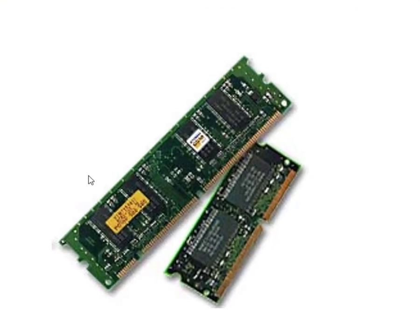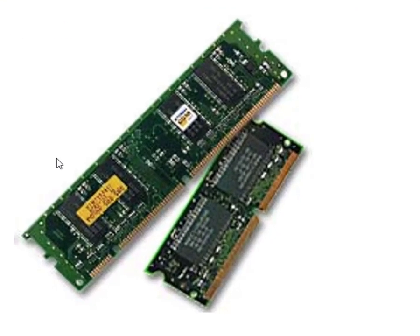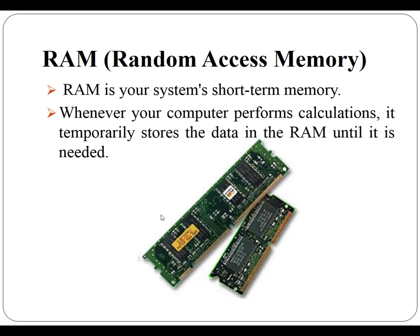Random access memory is another internal component of the computer. RAM is the system's short-term memory. Whenever your computer performs calculations, it temporarily stores the data in the RAM until it is needed. This short-term memory disappears when the computer is turned off. If you are working on a document, spreadsheet, or other type of file, you will need to save it to avoid losing it. RAM is measured in megabytes or gigabytes.